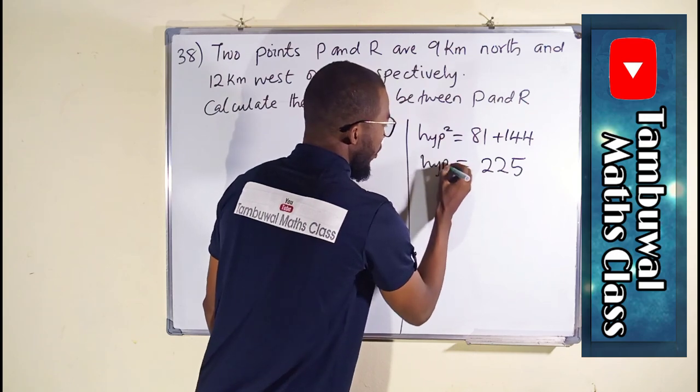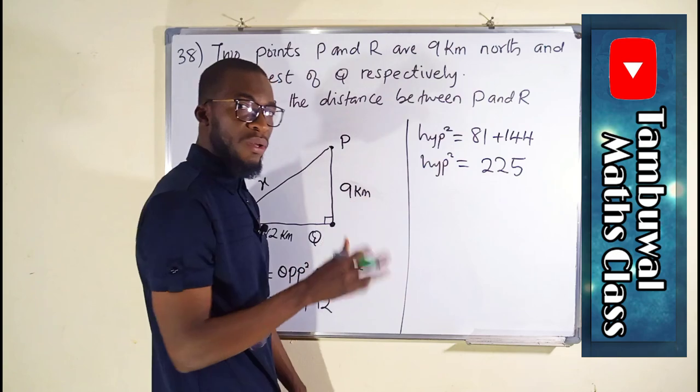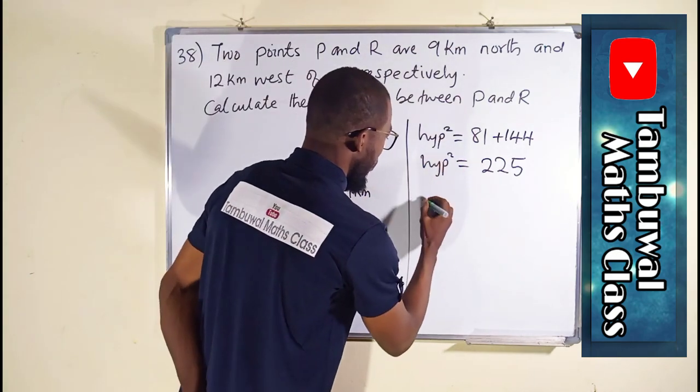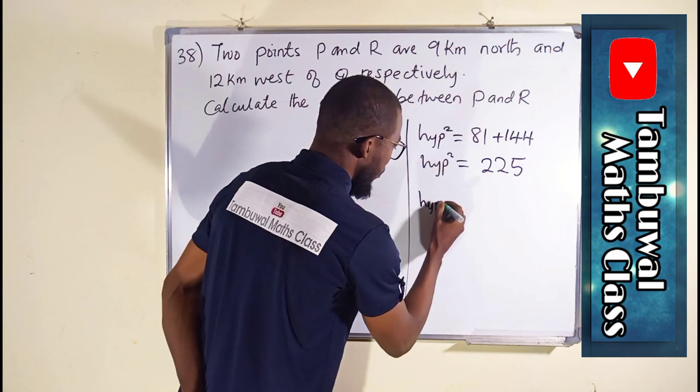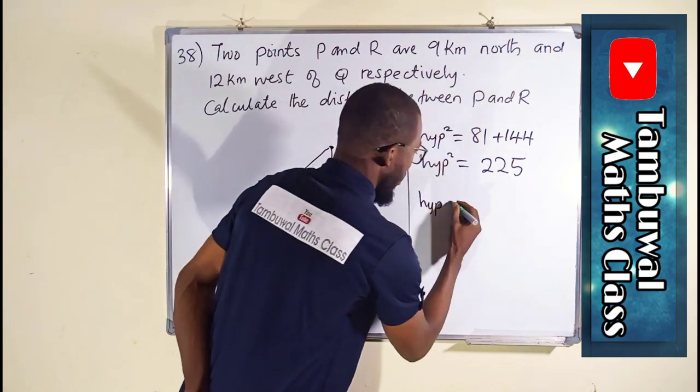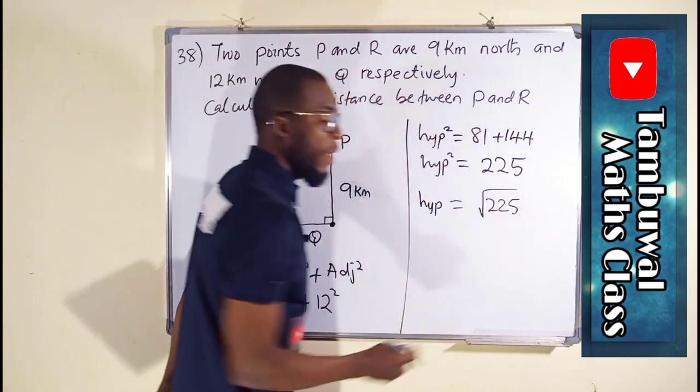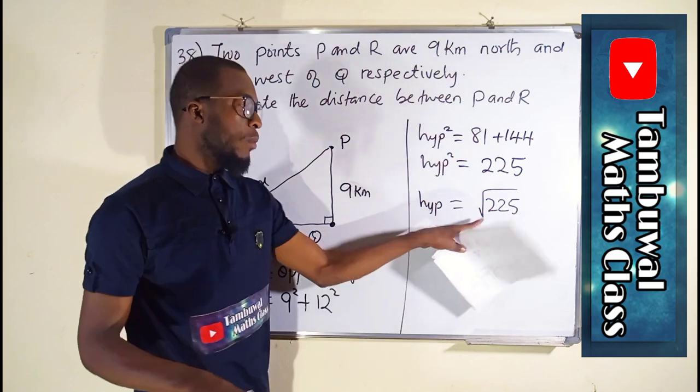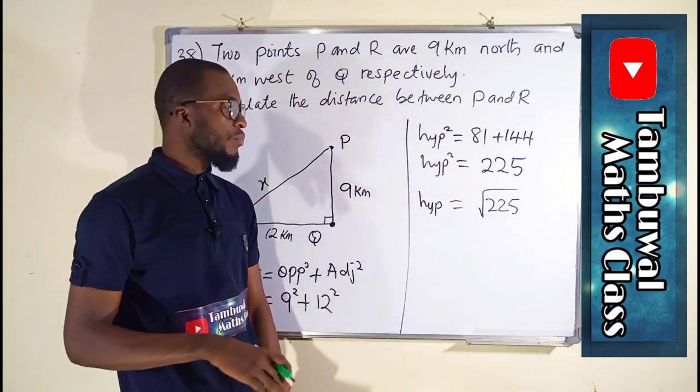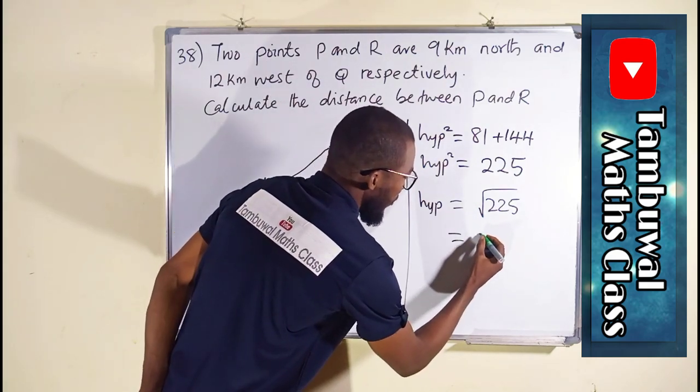And this is hypotenuse squared. Remember, we are looking for hypotenuse, not hypotenuse squared. So we can take the square root of both sides. So hypotenuse alone, which is our X, or RP, equals the square root of 225. We are not going to include plus or minus because we are dealing with distance. All distances are positive. And the square root of 225 is 15.